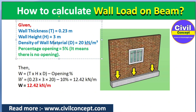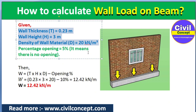Height of wall is 3 meters. Density of wall is 20 kN/m³ — it depends on the material, and you can take from 18 to 20 kN/m³. The percentage opening I am taking here is 10 percent, meaning 10 percent of the wall is opening. You can also take 5 percent, 15 percent if there is a door — it depends on the opening of the wall.